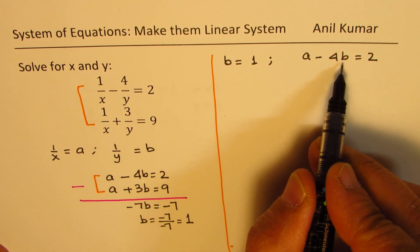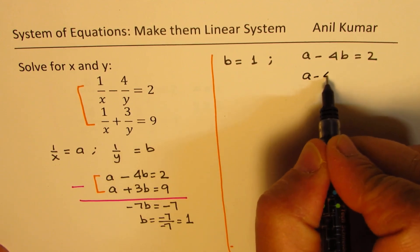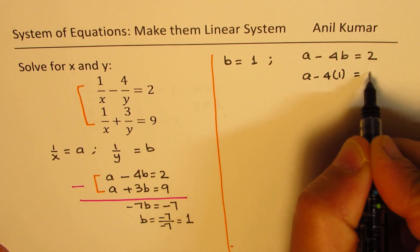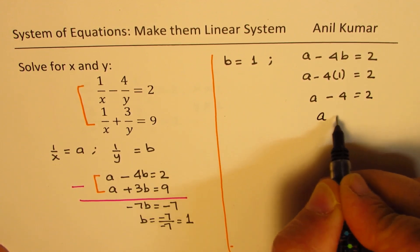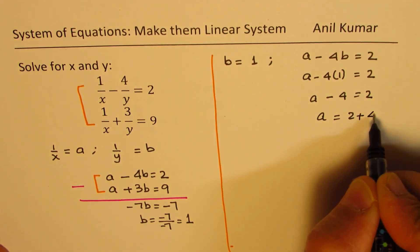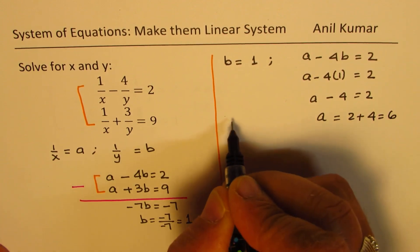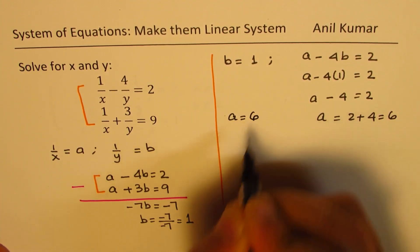Replacing b with 1, we get a minus 4 times 1 equals 2. A minus 4 equals 2, or a equals 2 plus 4 which is equal to 6. So we get the value of a as 6.